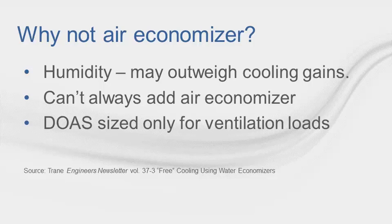Not all air handling units can be equipped with economizers due to space constraints, distance to the outdoor air intake, increased return or exhaust fan sizing, duct sizing or routing, or other application-specific constraints. Dedicated outdoor air units are typically sized to handle only the ventilation loads, so full cooling capacity cannot be achieved by an air-side economizer. Now let's talk about some different types of waterside economizers and how to model them in TRACE 700.